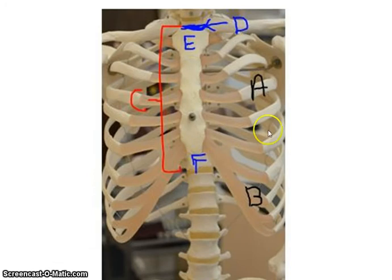You also have the ribs that you can see here. Notice that the ribs do not directly attach to the sternum. They attach through cartilage called the costal cartilage.